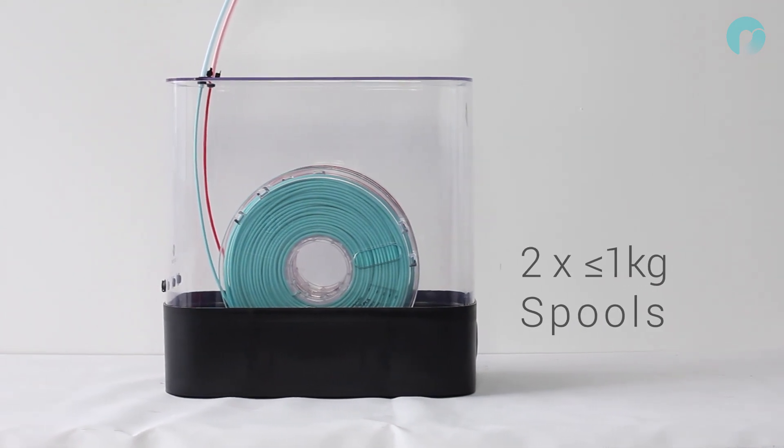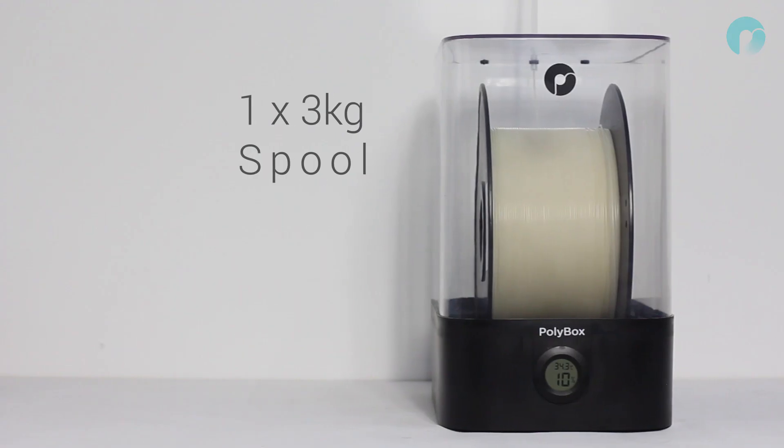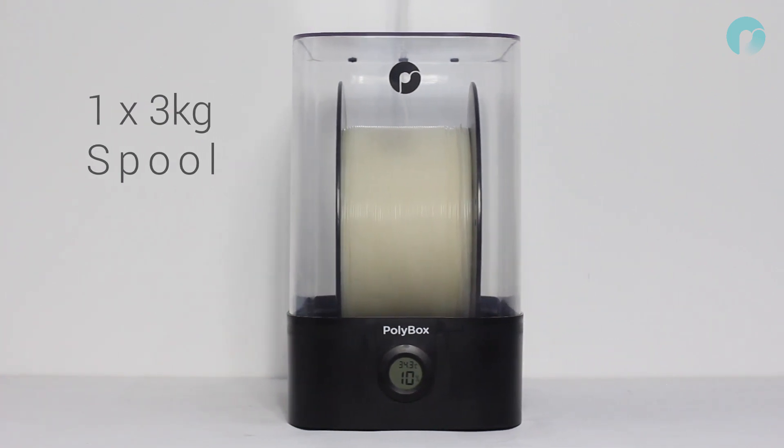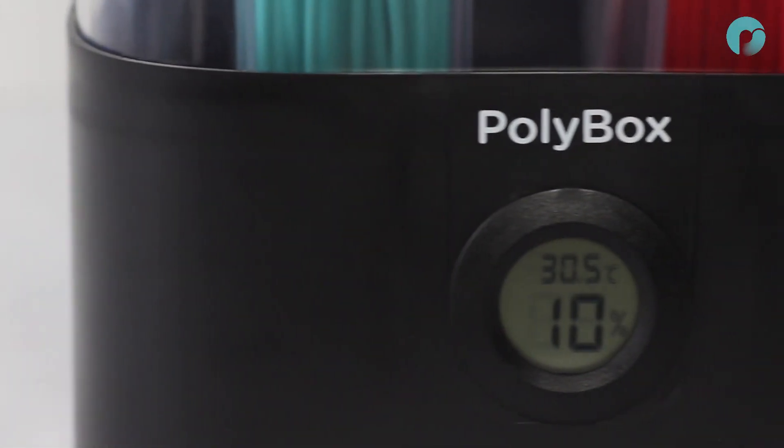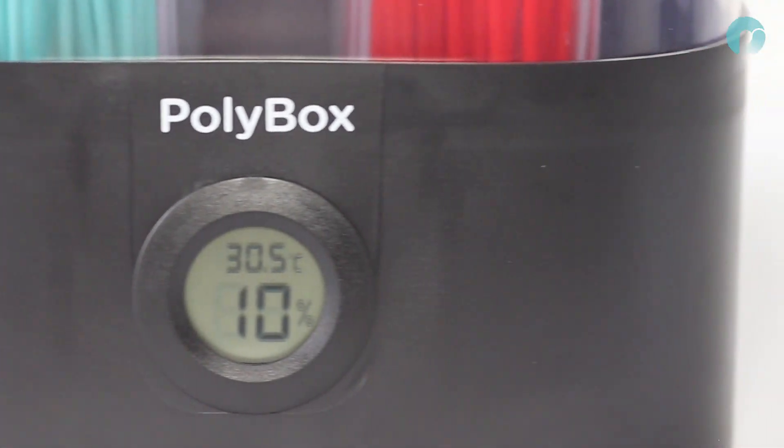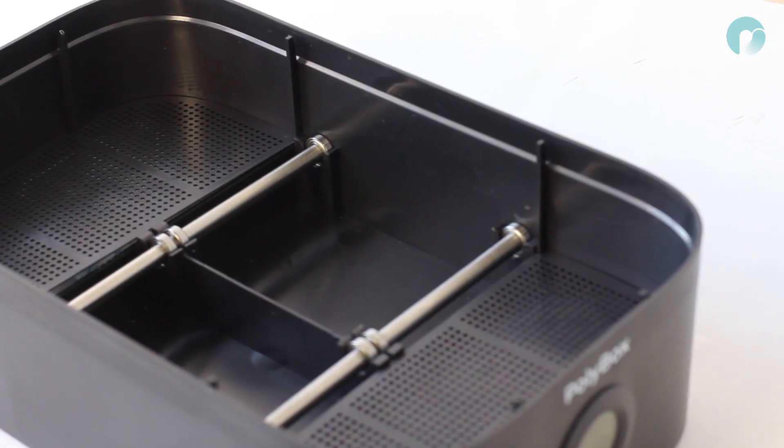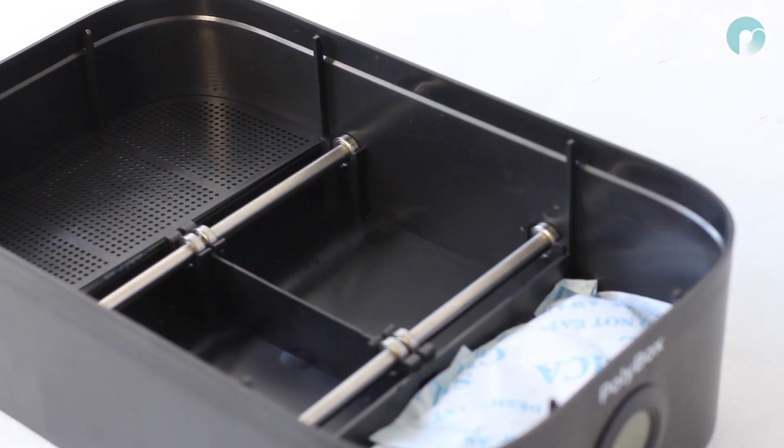Polybox can store two 1kg spools side by side or one 3kg spool for heavy or industrial users. Polybox features a high precision thermohygrometer to monitor the environment inside the box, which is regulated by large desiccant bags which absorb moisture from the surrounding environment.